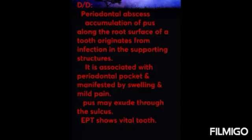Differential diagnosis: acute alveolar abscess should be differentiated from periodontal abscess. In periodontal abscess, accumulation of pus occurs along the root surface originating from infection in the supporting structures, associated with a periodontal pocket, and manifested by swelling with mild pain. If pus extrudes from the sulcus, it is definitely periodontal abscess. The main differentiating point: in periodontal abscess the pulp is vital, while in acute periapical abscess the pulp is necrotic — EPT shows response in periodontal abscess but no response in acute periapical abscess.